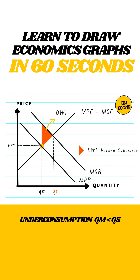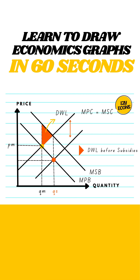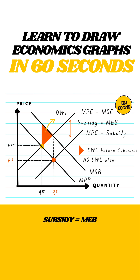In the free market, this leads to under-consumption and creates a deadweight loss. To correct this, the government provides a subsidy per unit. This lowers the cost of production, shifting the MPC curve downwards.